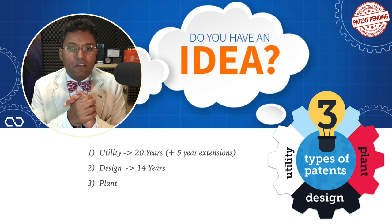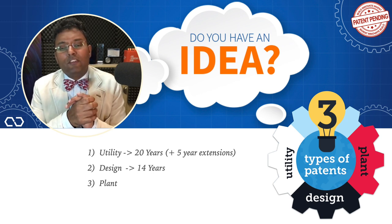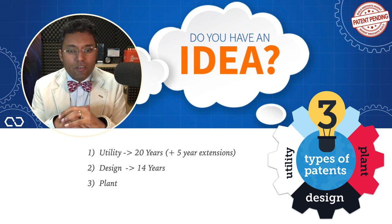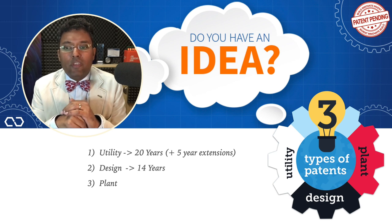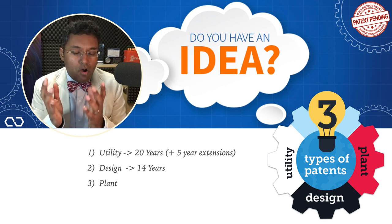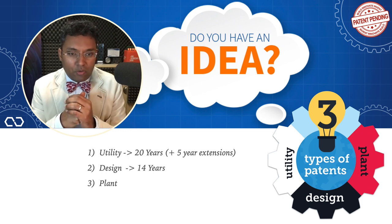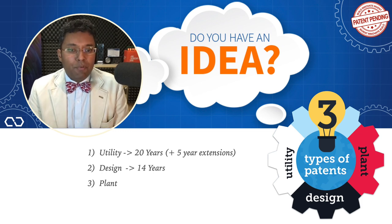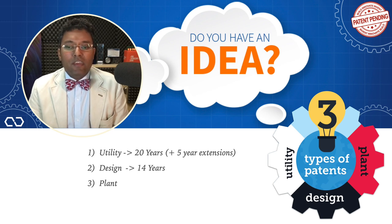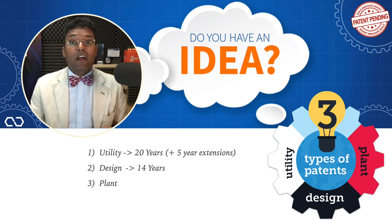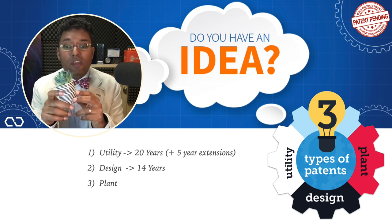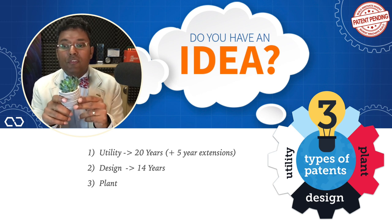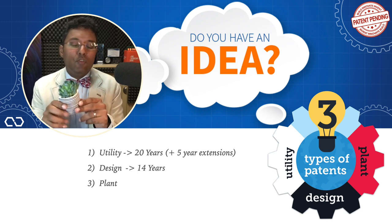There are three kinds of patents that you can file for. The utility patent is the most popular one — it involves inventing or discovering something new: a process, a new machine, or an article of manufacture or a composition of multiple metals mixed together, so an alloy. The next type is a design patent, which is more for ornamental use. And the third kind is called a plant patent, mainly granted to anyone who invents, discovers, or is able to reproduce any distinct and new variety of plants.